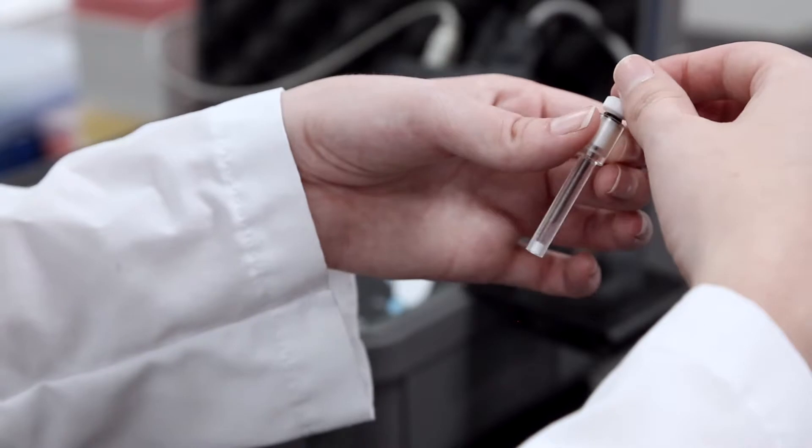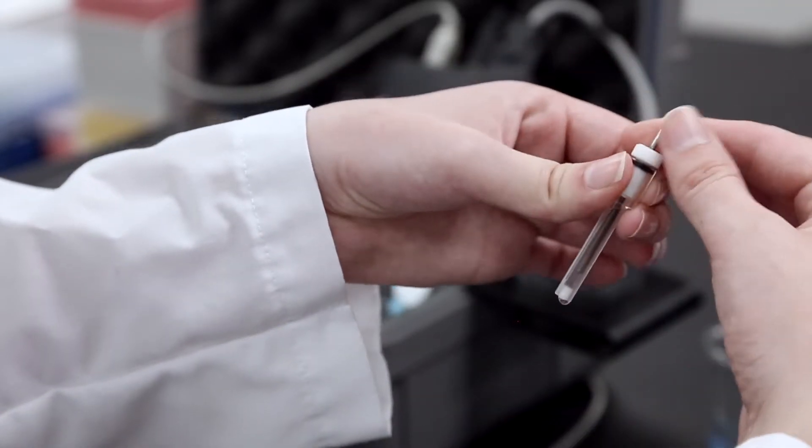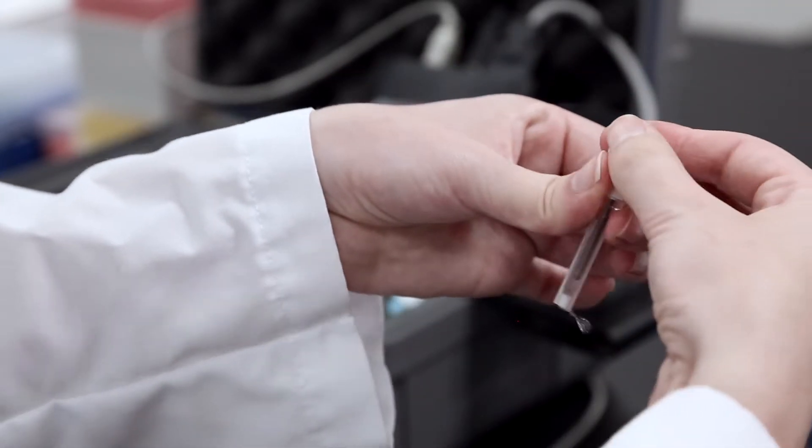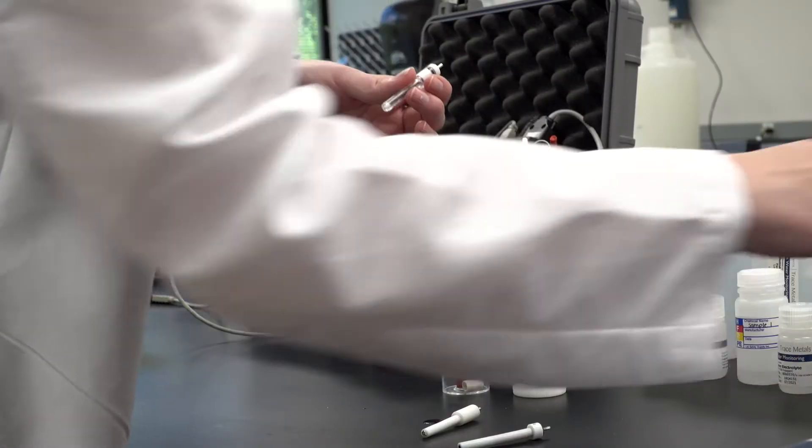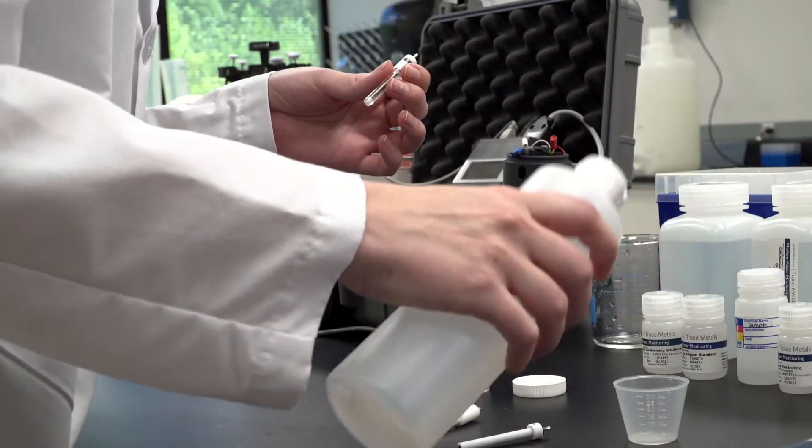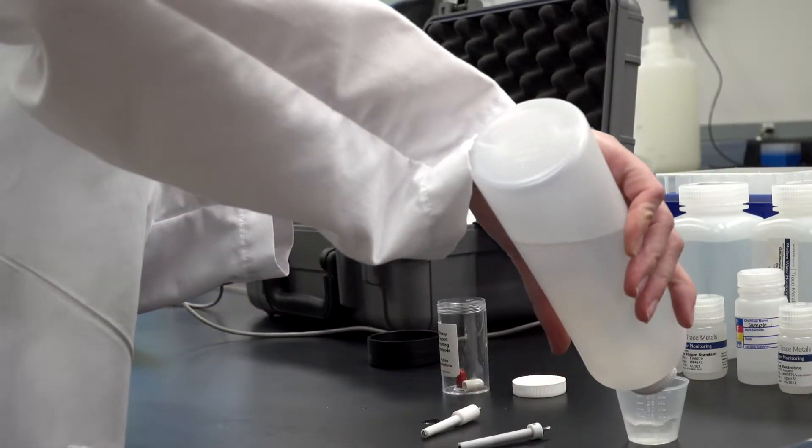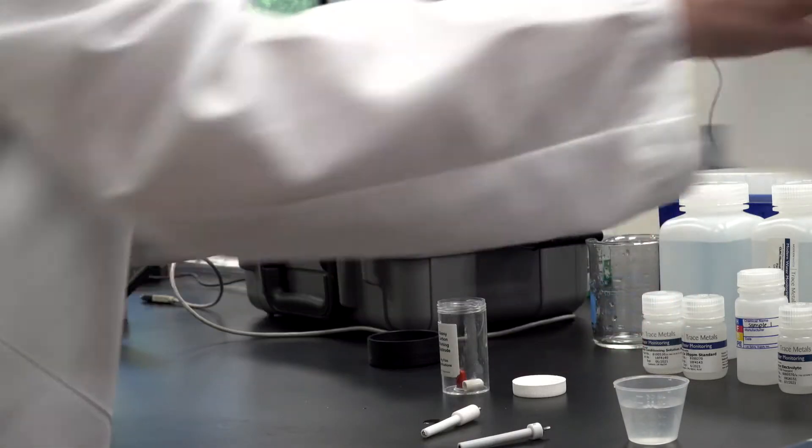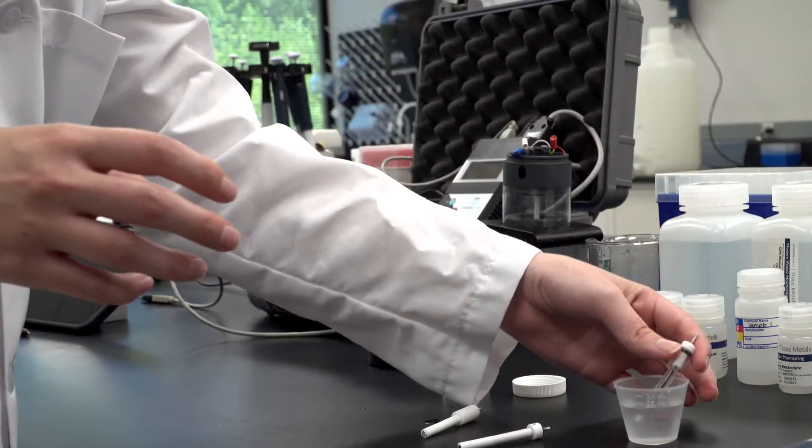Keeping both parts upright, insert the electrode into the electrode sleeve. Use a twisting motion to get the O-ring into the electrode sleeve. You should see a small amount of liquid come out through the white frit at the end. Store upright in the analysis cell or a cup of deionized water.